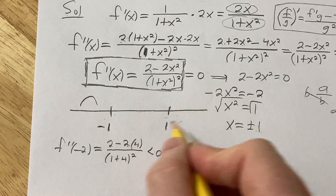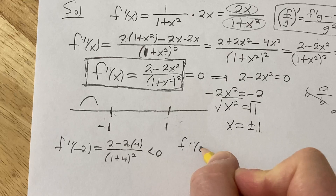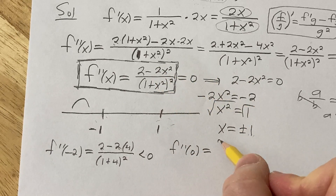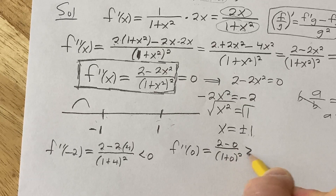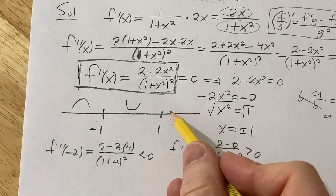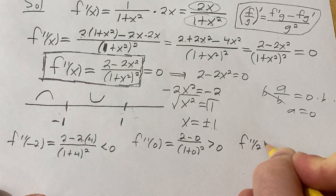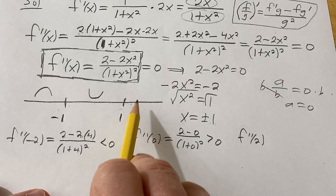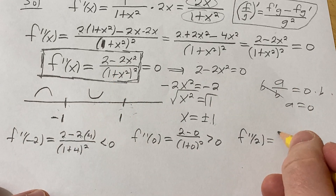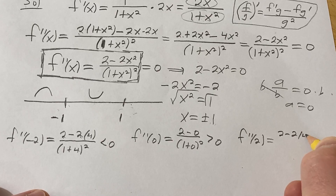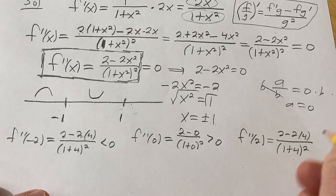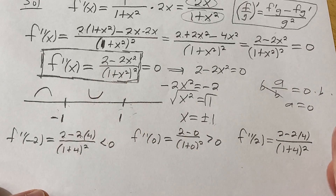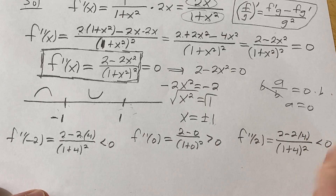Let's pick 0 — that's a really easy number between negative 1 and 1. Plugging in 0, we get 2 minus 0 over 1 plus 0 squared, which is going to be positive. So it's concave up over here. And let's plug in 2: we get 2 minus 2 times 4 over 1 plus 4 squared. That's 2 minus 8, which is negative 6. Negative 6 over a positive number is negative, so it's concave down.